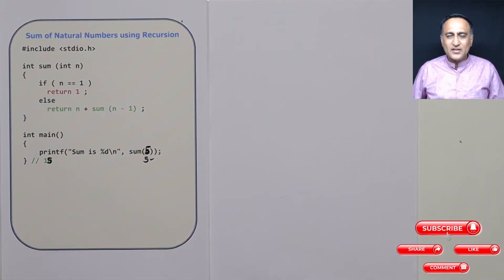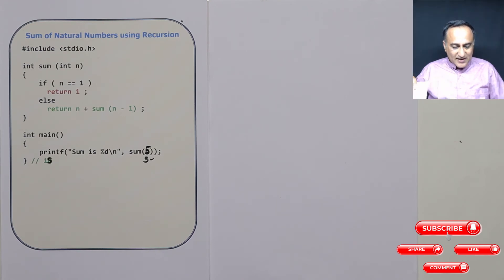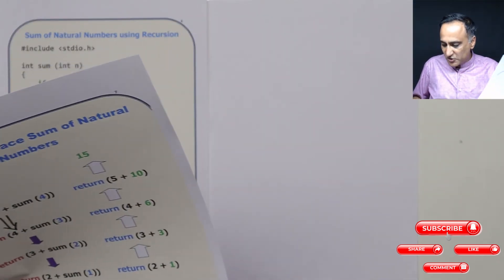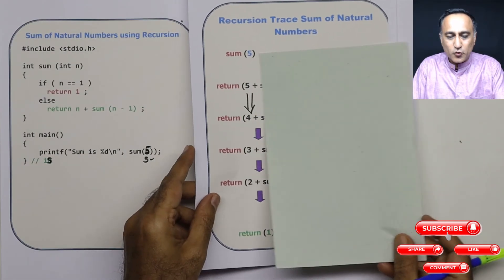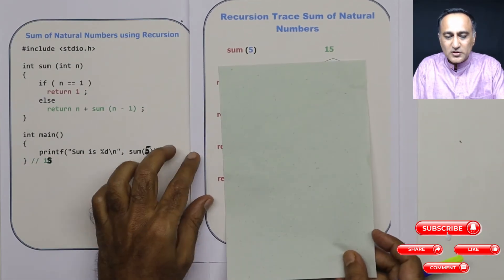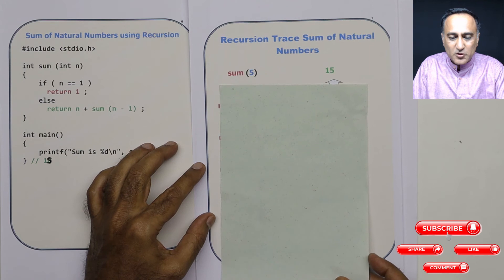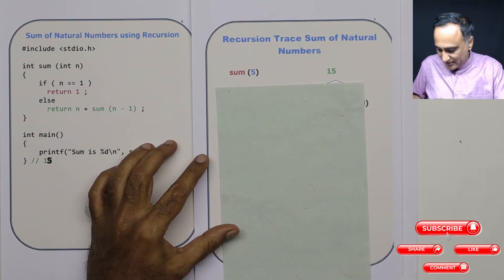You can take any value of parameter to sum and you will still get it. Now just to refresh your understanding as to how the logic can also be understood using the call trace, I will show you. I will be showing it now using the call trace.